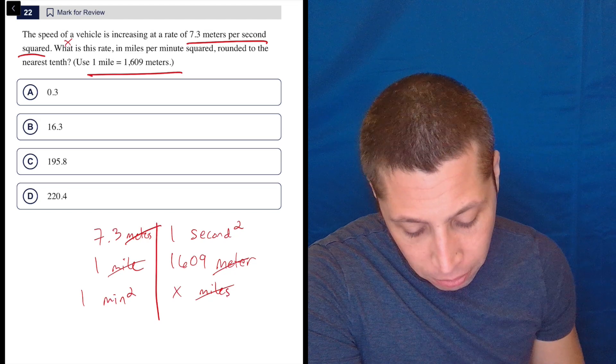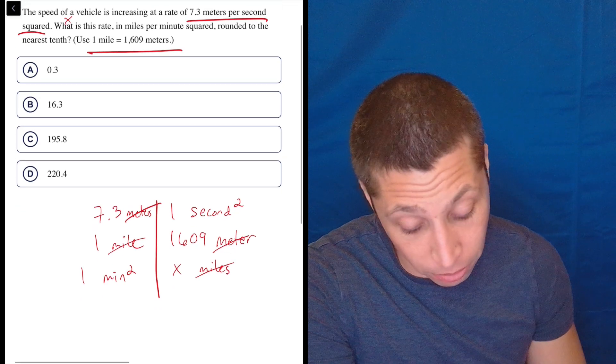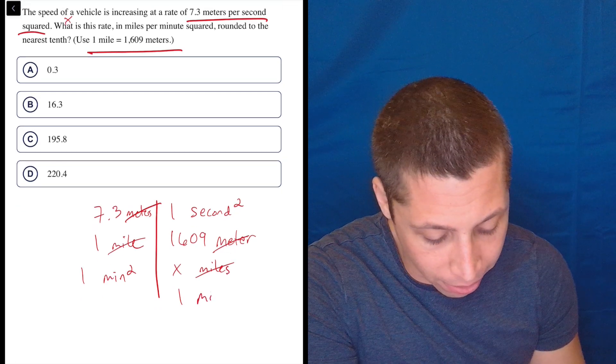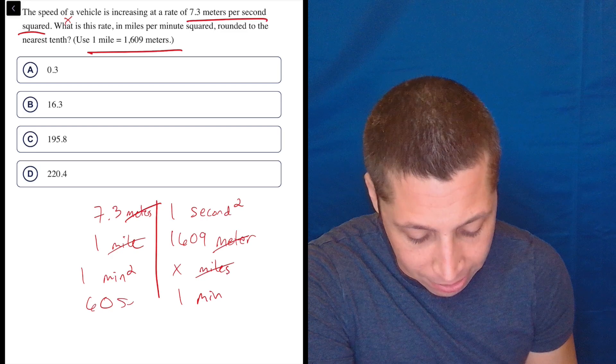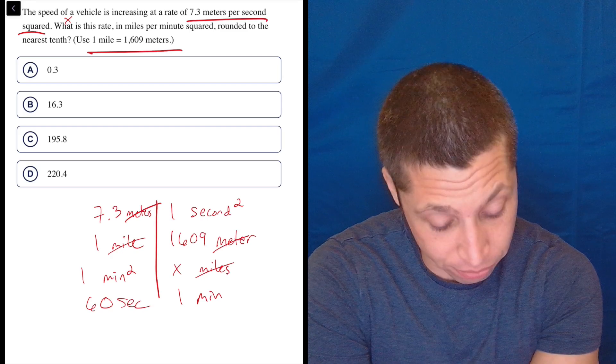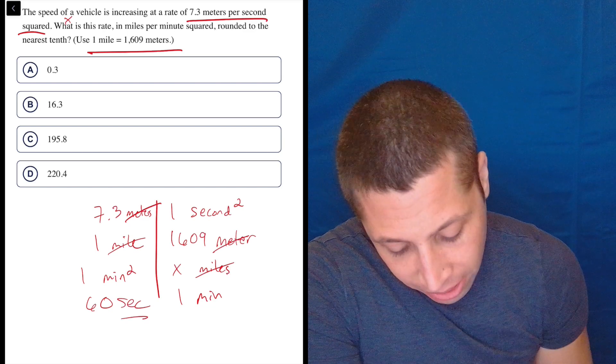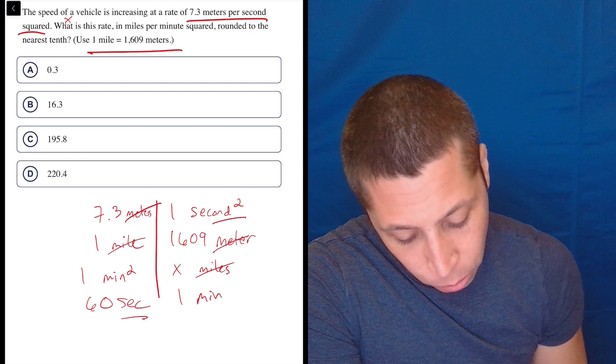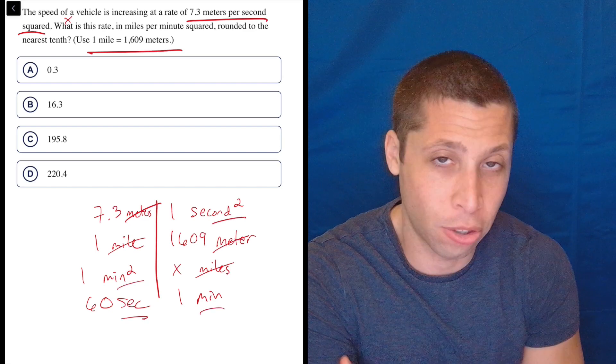Now the problem is how do I convert minutes to seconds? Well, that one's hopefully easy for you, right? Because one minute is 60 seconds. Here's the problem is that's not enough because we don't have seconds. We have seconds squared. We don't have minutes. We have minutes squared.